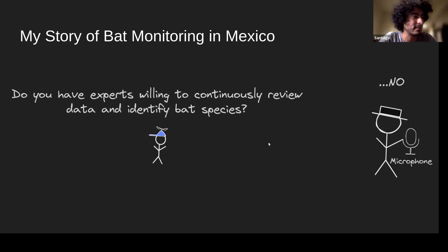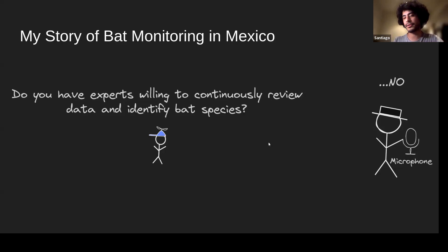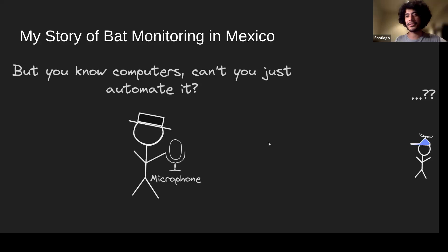The first answer from biologists was: do you have enough experts who can identify bat calls and are willing to review the incoming data so we know which species are where? That's completely unfeasible — there aren't enough bat experts in Mexico for the volumes needed in a national-scale program, and their time is very valuable. At that point people stared at me and said: you're a mathematician, you know how to use computers — can't this just be automated?